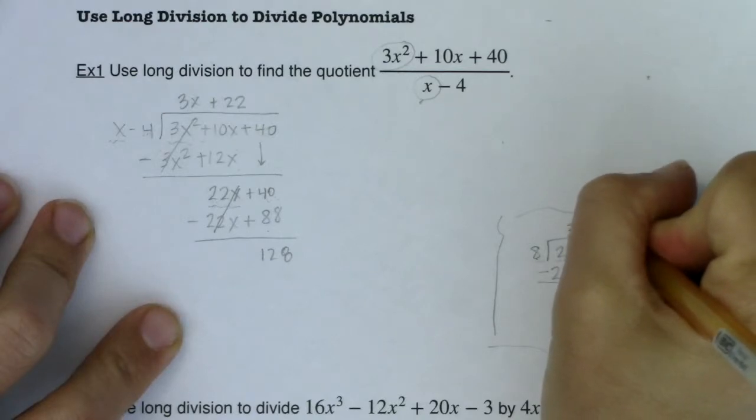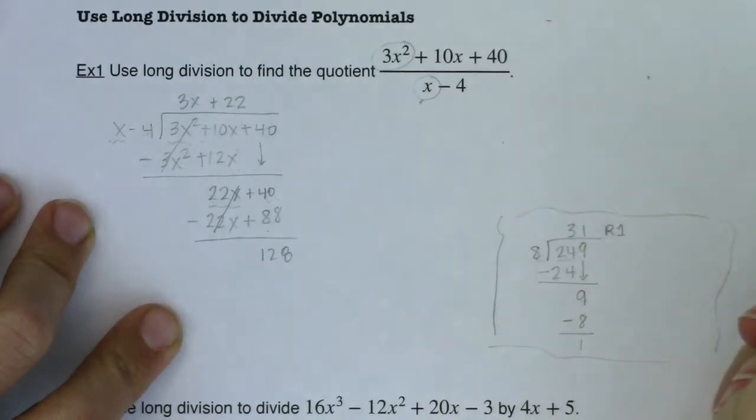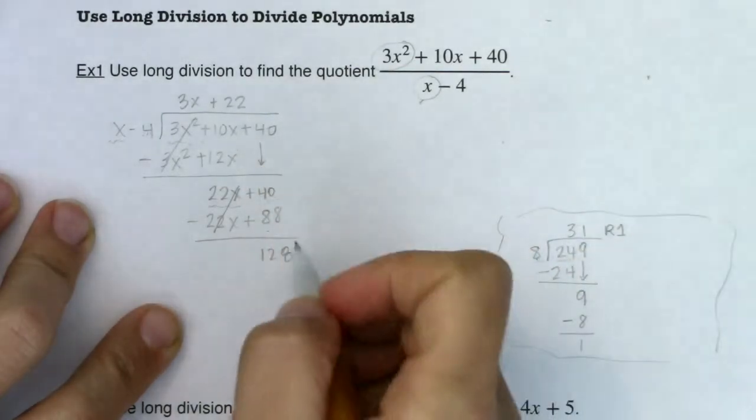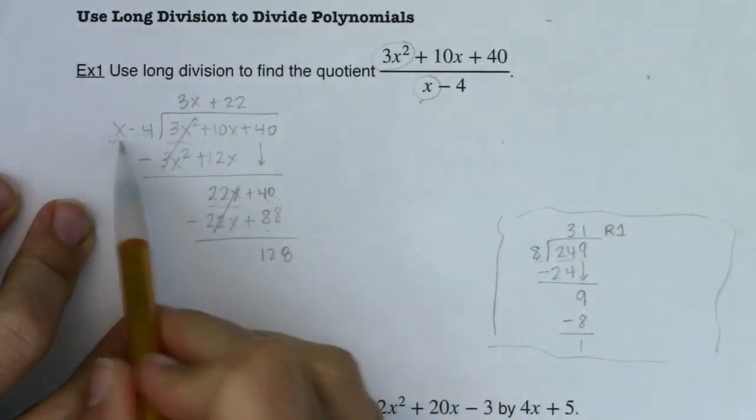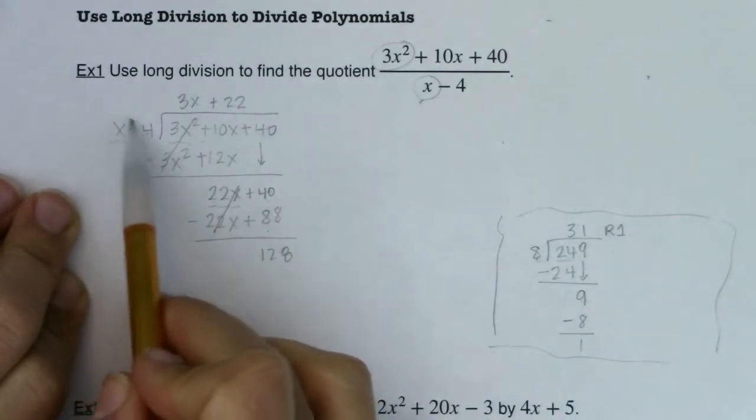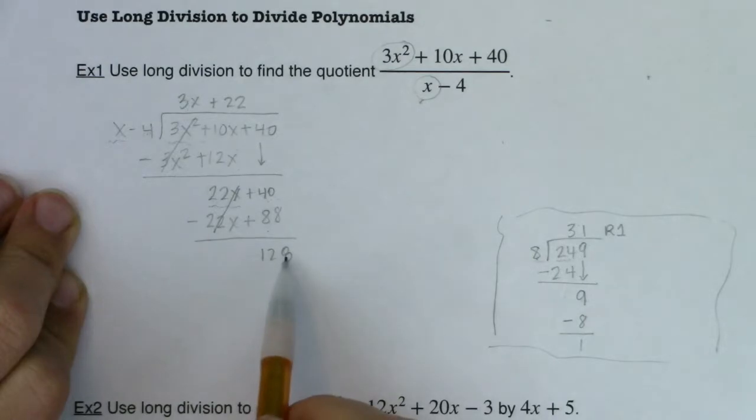I think back in previous math classes, you would write remainder 1. That would probably be something that you did. In here, with long division of polynomials, you know you're at your remainder level when the degree on your lead term here is less than, excuse me, is more than the degree on your lead term here.